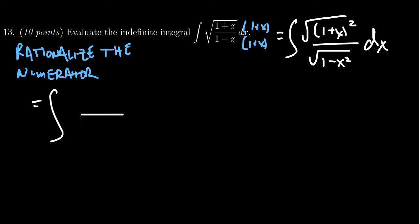And so then we have 1 plus x on the top, square root of 1 minus x squared on the bottom. And so now this algebraic idea of rationalizing the numerator helped us in so much that in this situation, it then starts to look like, well, maybe I should do some type of trigonometric substitution.